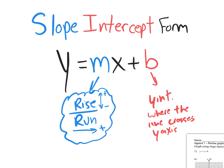So how do we graph using slope-intercept form? You begin with the y-intercept, and then you rise and run accordingly from that point.